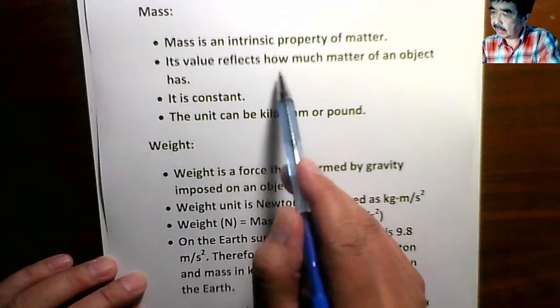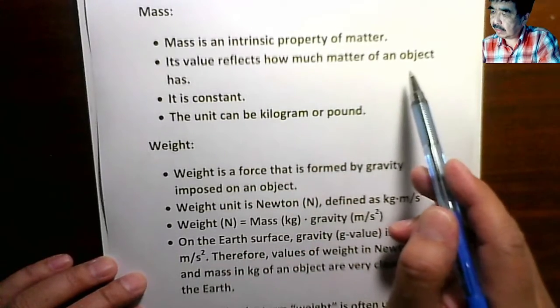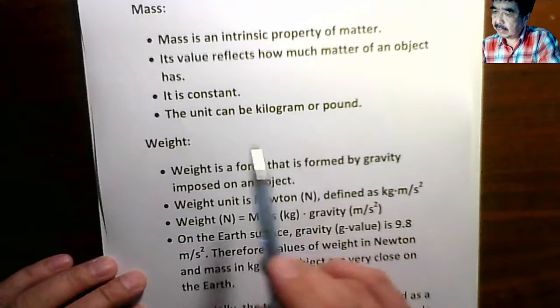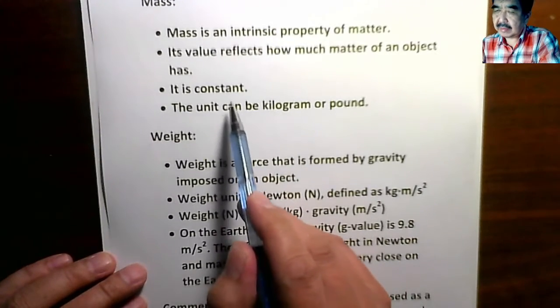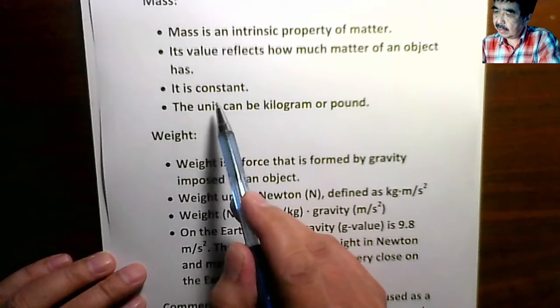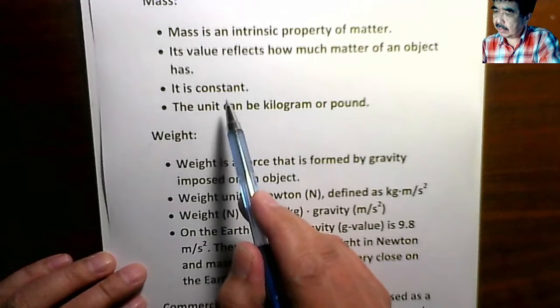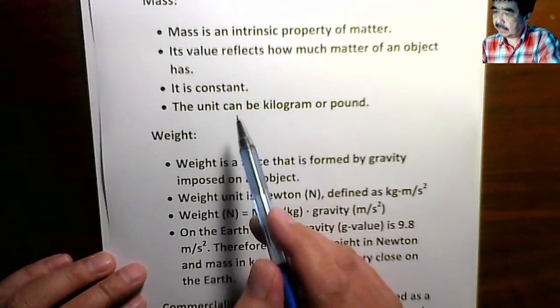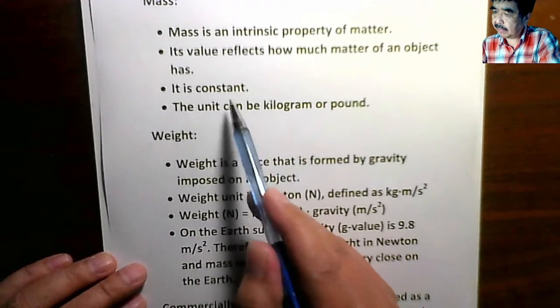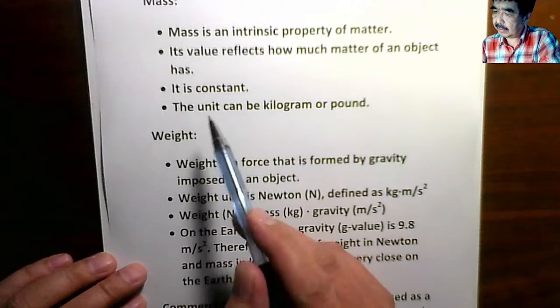Okay, it's how much matter an object has. It's a constant. Okay, it doesn't change. We will talk about later when the gravity changes. It's a constant.